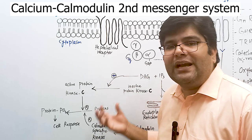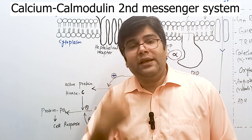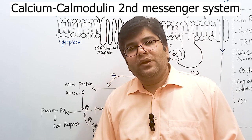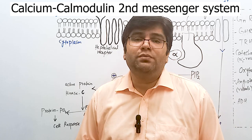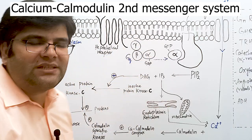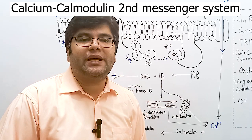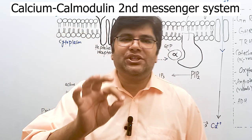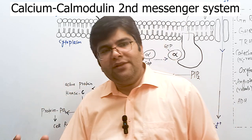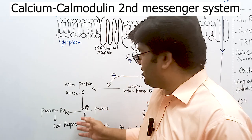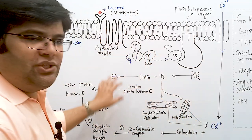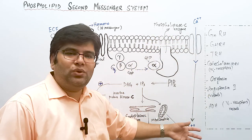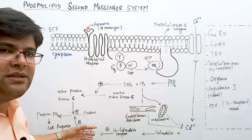Functions affected by the calcium-calmodulin second messenger system include opening or closure of ion channels, activation of cytoskeletal proteins, and smooth muscle contraction. In smooth muscles, the calcium-calmodulin complex activates myosin light chain kinase — a calmodulin-specific kinase — which phosphorylates one of the light chains of the myosin molecule, causing interaction between myosin and actin, and hence smooth muscle contraction. Similarly, DAG also activates kinases that phosphorylate proteins to achieve analogous functions.